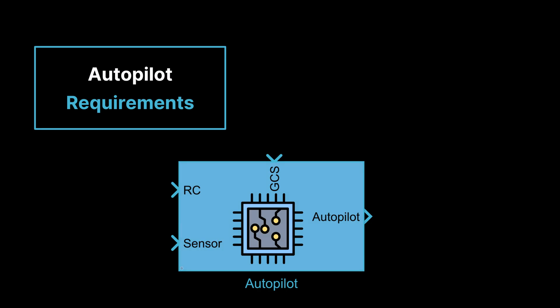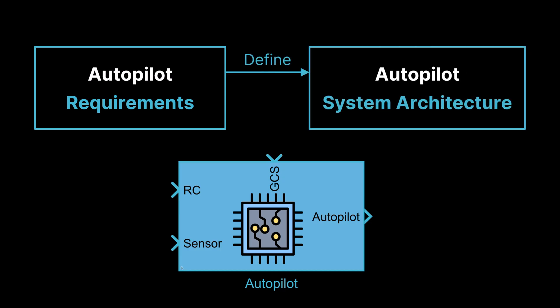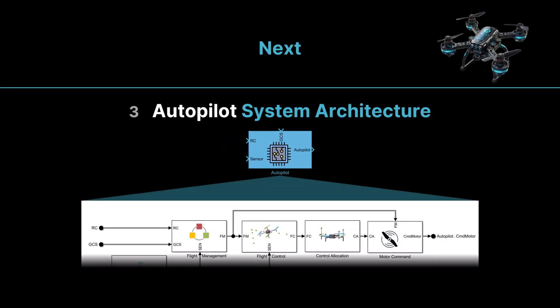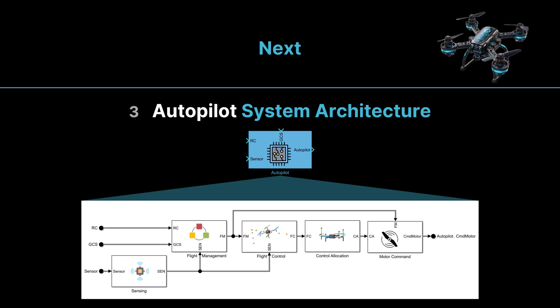Now we have introduced the functional requirements of an autopilot. Combining other requirements such as safety requirements and performance requirements, we can define the system architecture of the autopilot. The autopilot system architecture is designed to meet these requirements, ensuring all systems work together seamlessly to meet both functional and safety standards, providing a reliable, stable, and safe flight experience. In the next session, we will explore the system architecture of the autopilot. I look forward to your participation.